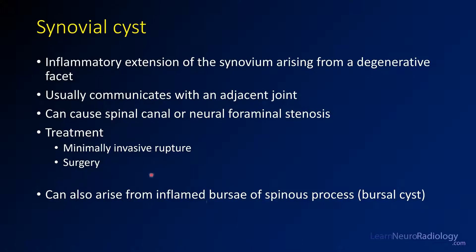The treatments for these — you can try minimally invasive rupture, though sometimes they're going to recur. You can also do surgery and do a partial facetectomy or a laminectomy to take those out. You can also get these with the inflamed bursa of the spinous process; in those cases they're a bursal cyst.